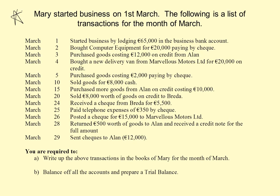Getting started. We start up here in the top left hand side of the page. Mary started business on the 1st of March. The following is the list of transactions for the month of March. You are required to write up the above transactions in the books of Mary for the month of March, which means we will enter those transactions into Mary's ledger accounts. Then in part B, we will balance off the accounts and prepare a trial balance.